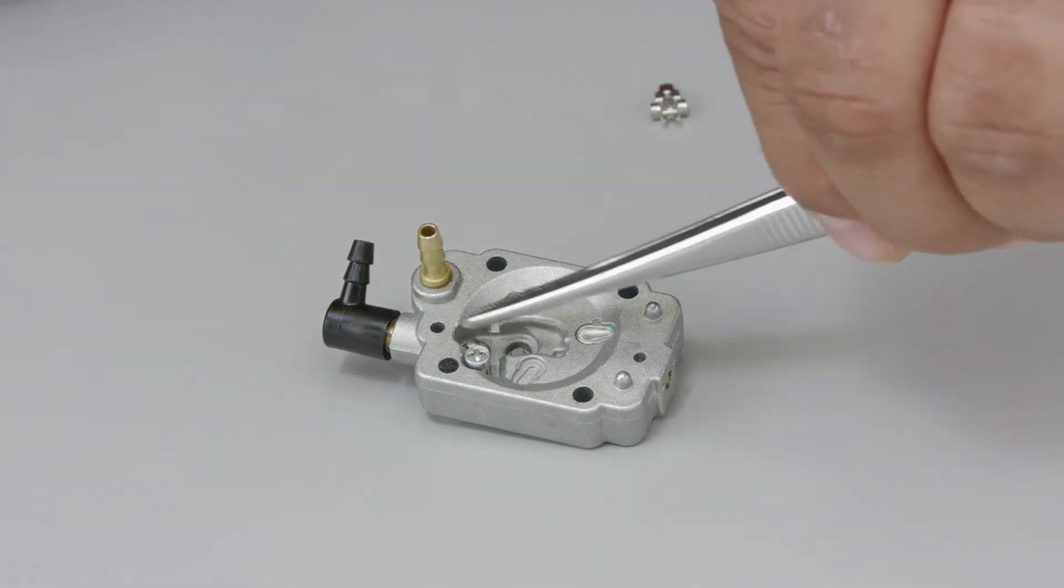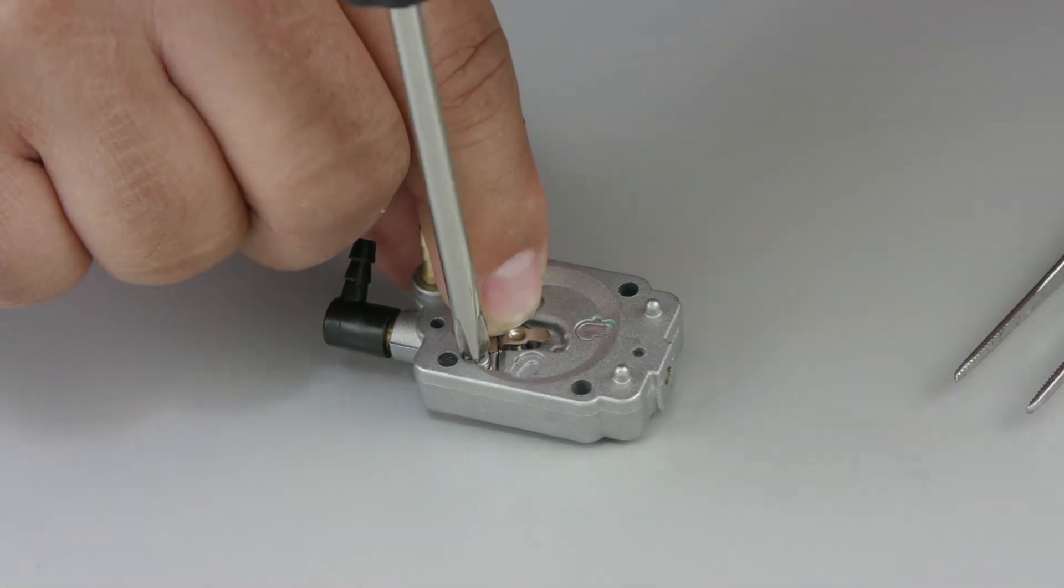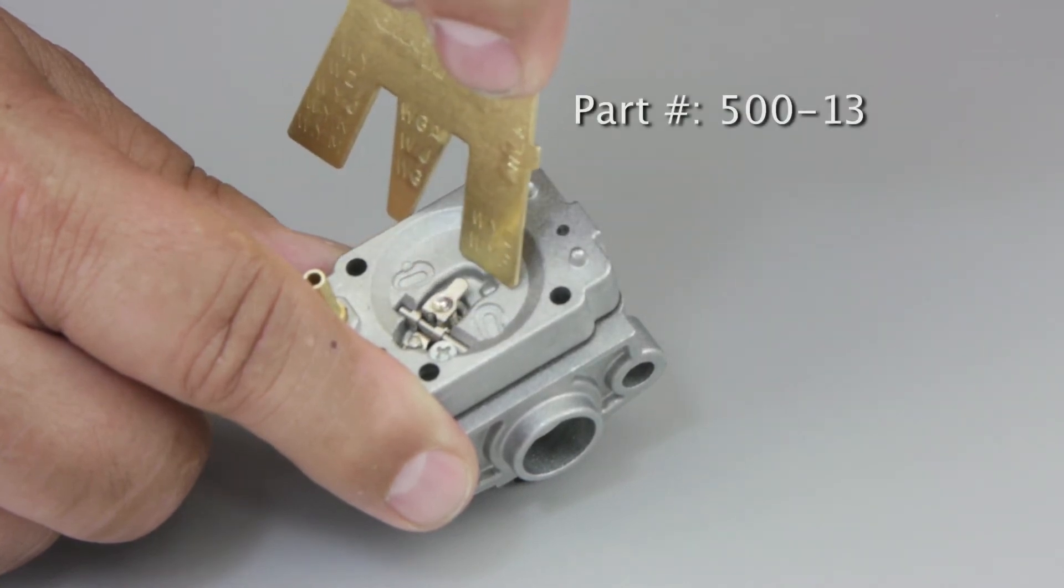Reassemble the meter area using original Walbro parts. Check the lever height adjustment with Walbro's meter gauge number 500-13 and adjust as needed.